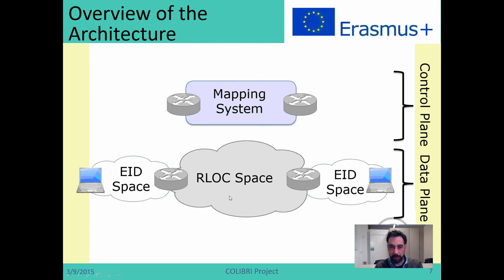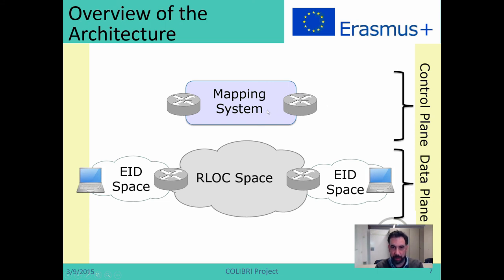This is the LISP architecture — it decouples the control from the data plane, giving us two clearly separated planes. On the data plane we have end-hosts, routers, and so on. We also have the control plane, which is called the mapping system, which is a distributed database. You can think about the mapping system pretty much like the DNS we have today — the DNS is a distributed database on the internet, and the mapping system is pretty similar.